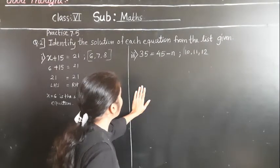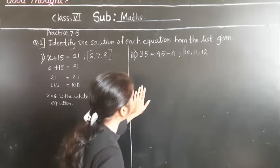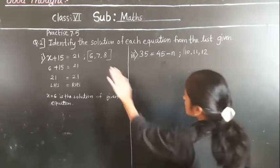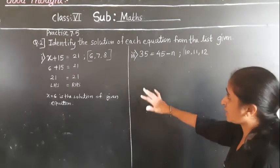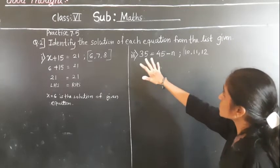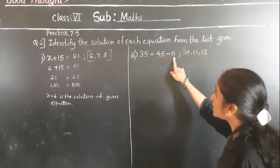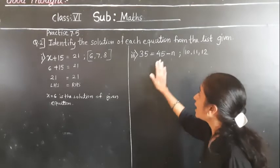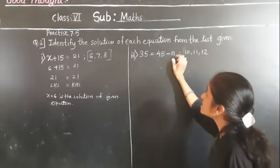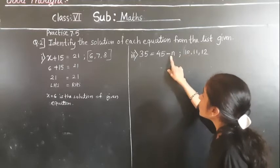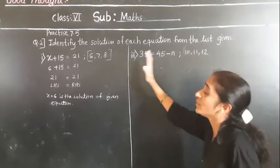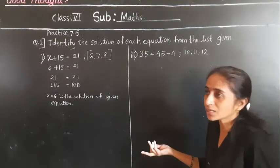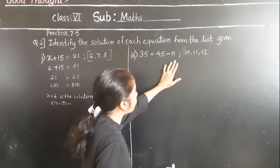Next equation: 35 is equal to 45 minus N. This is the given equation. By observing only, we can see the answer — no need to use trial and error. Left hand side we have 35, and in right hand side we have 45 minus N. So 45 minus which number gives us 35? 45 minus 10 gives 35. So put N equal to 10.